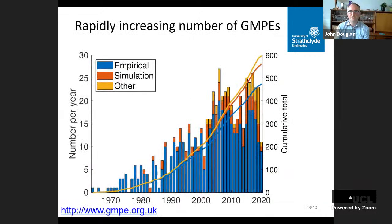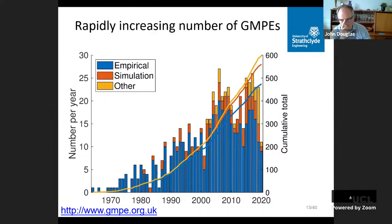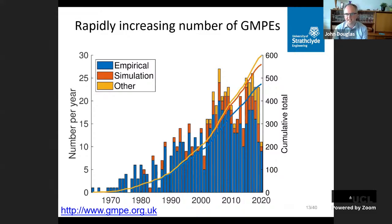As GMPs have been developed over the last decades, we now have about 600 GMPs in the literature with 20 to 25 models published every year. If you're interested in looking at available models, you can check my website listed at the bottom. Obviously with this number of models we need a way of choosing which ones to use.